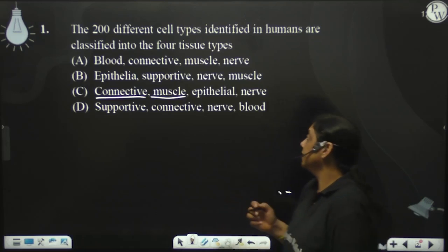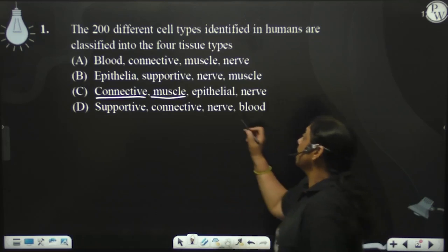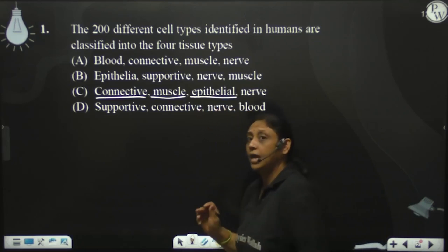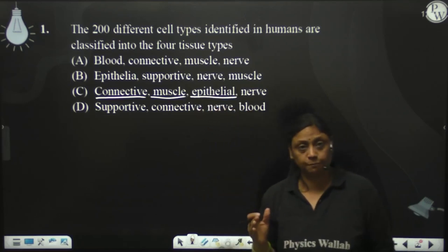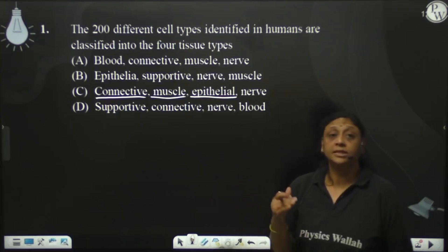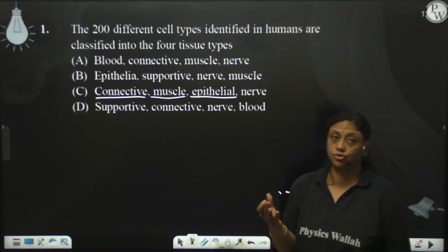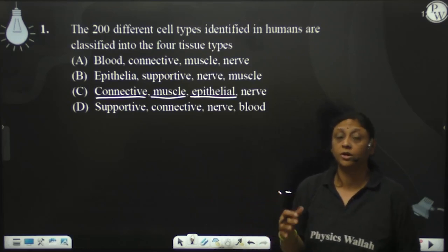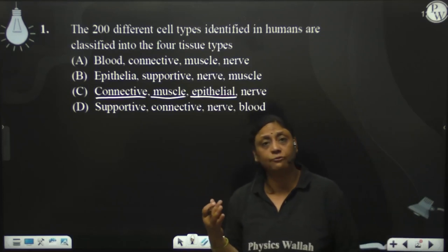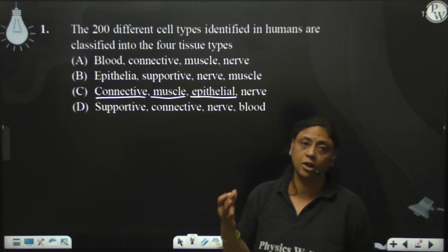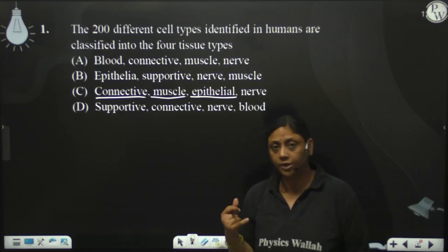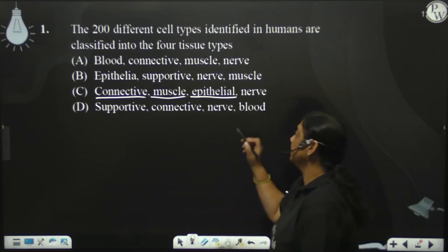Next, epithelial tissues — they provide protection. They help in diffusion, absorption, and excretion. They mainly form the lining of the hollow organs.